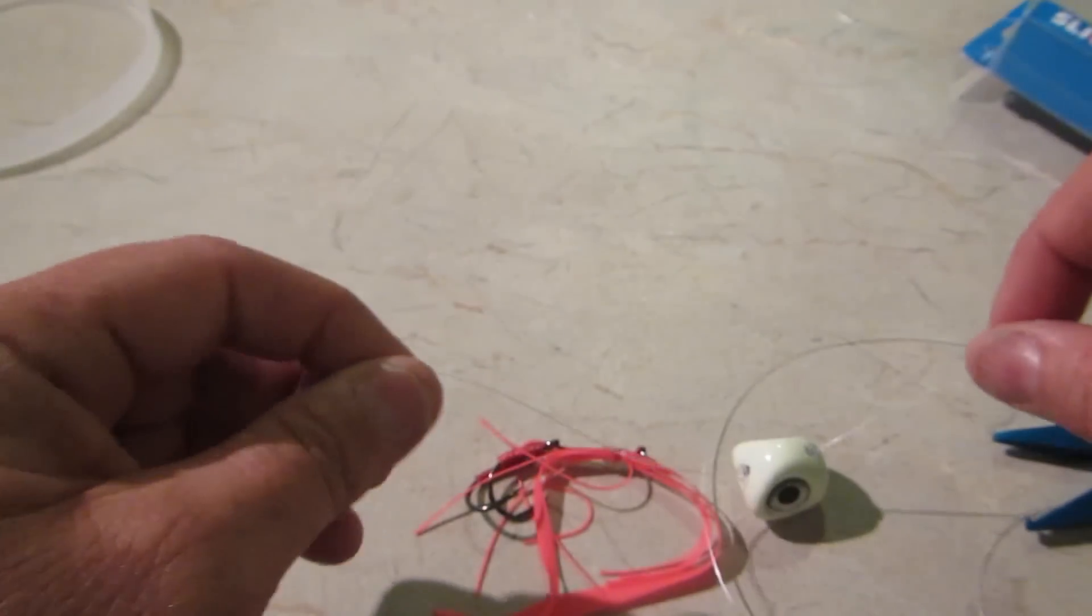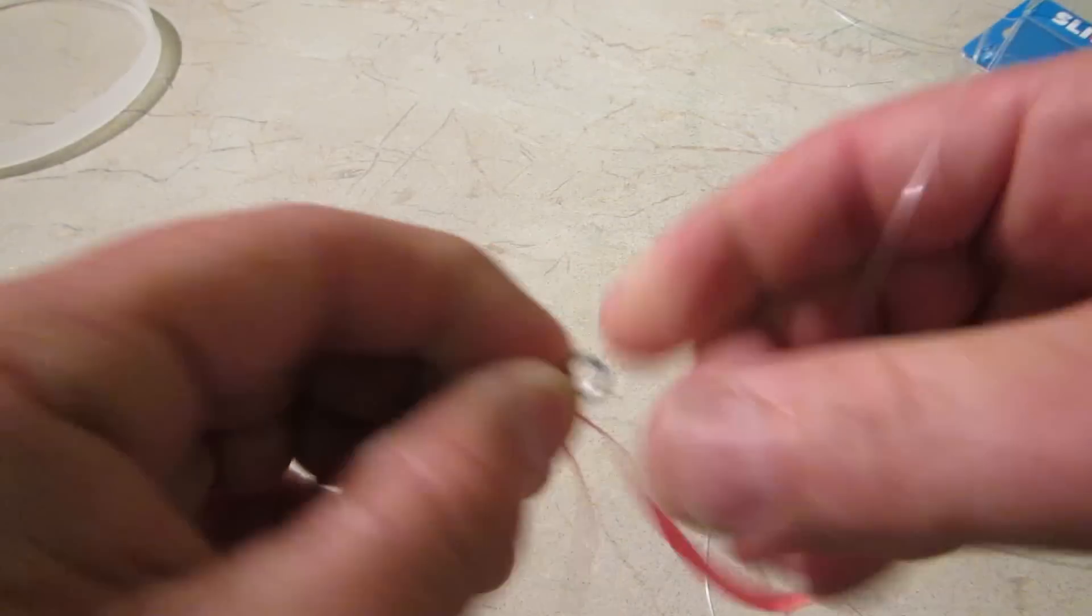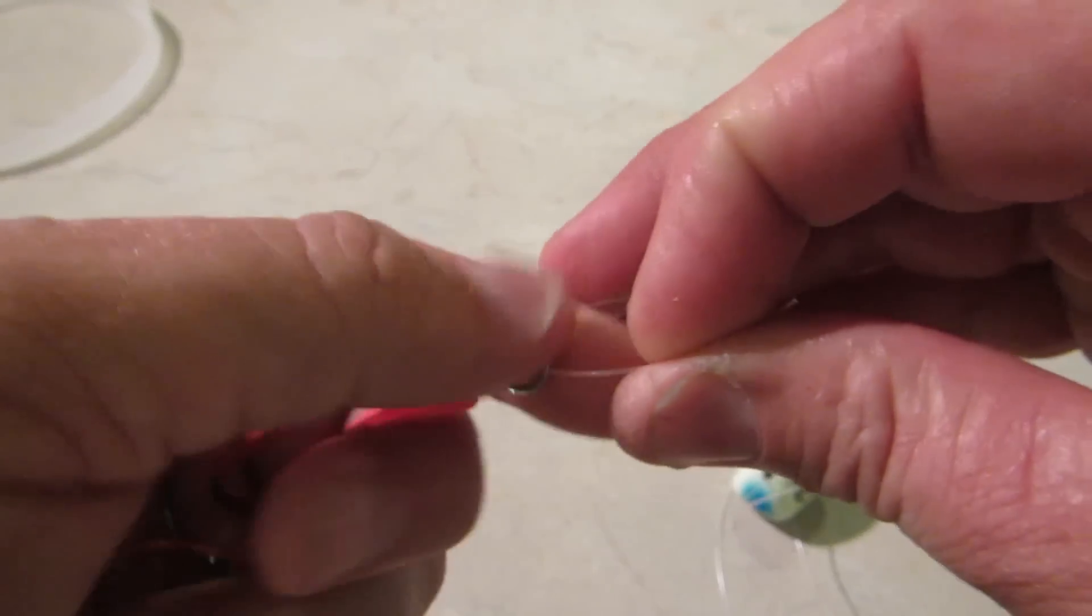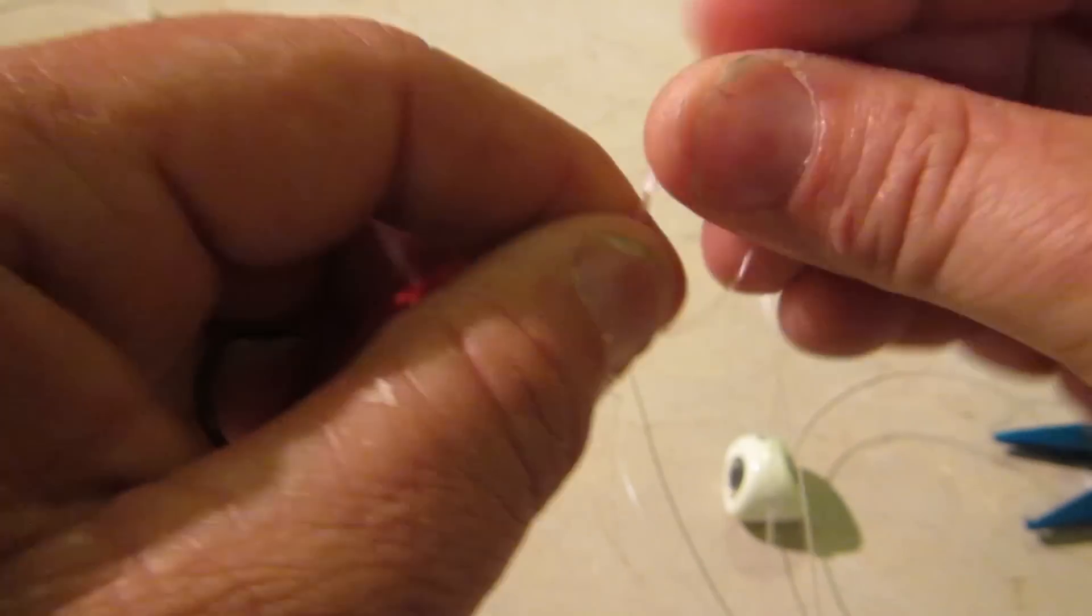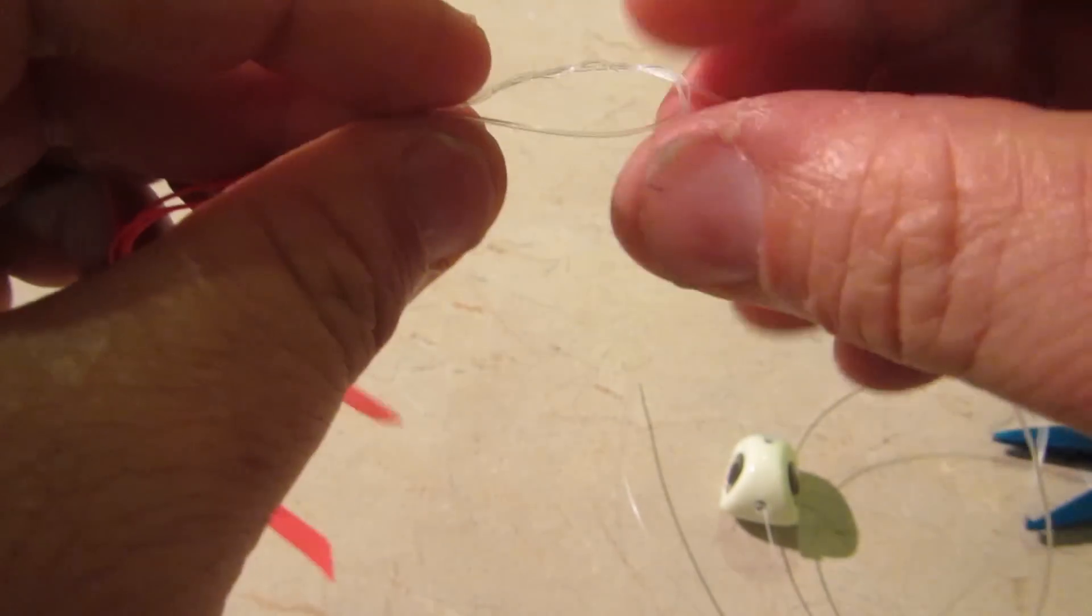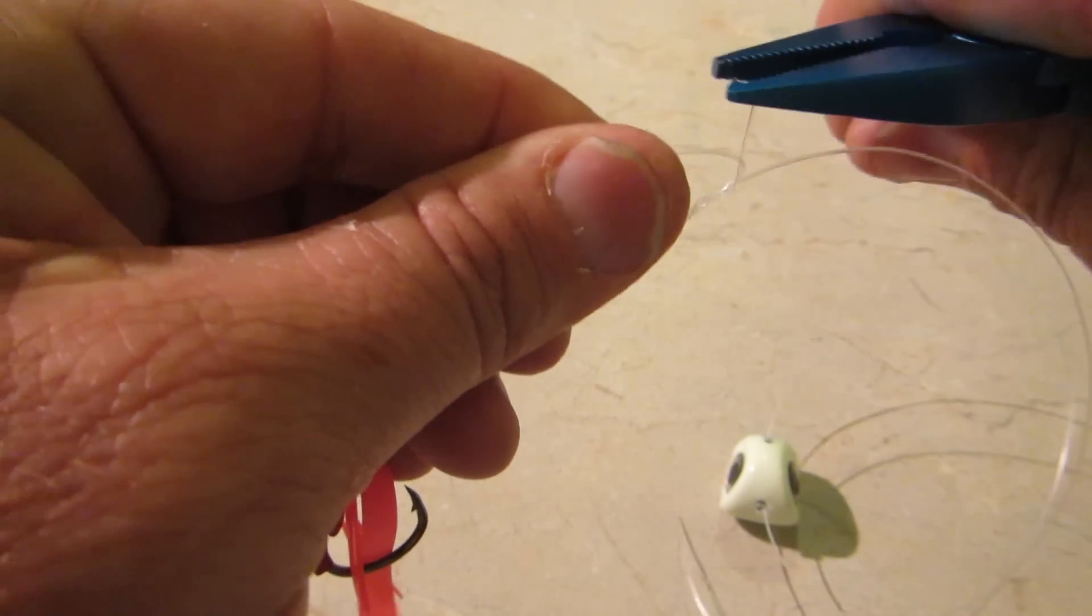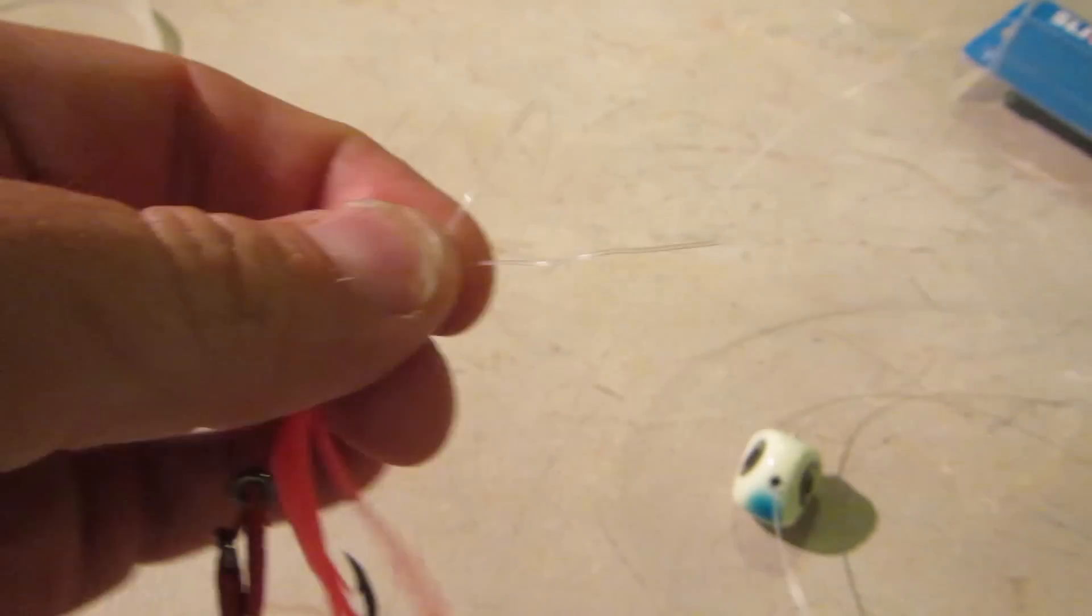Then we tie the fluorocarbon onto the solid ring here. I just use a simple uni knot, so uni knot with three, four turns in it - one, two, three, four - pull it tight, pull the uni knot down. Can't use my teeth because I have to put my head in front of the camera, so I'll use these little neat pliers to pull it down. Excuse the snivel, I've got a bit of a cold at the moment. Chop it off.